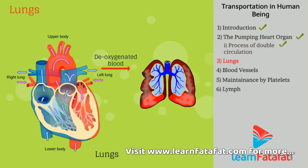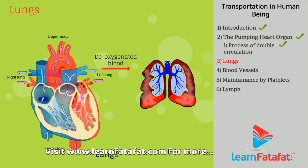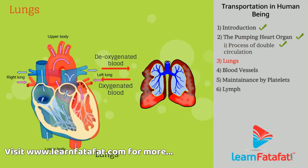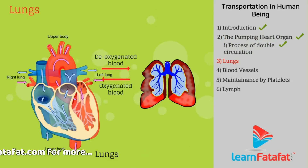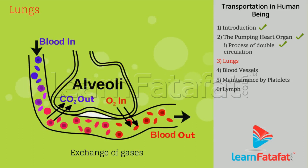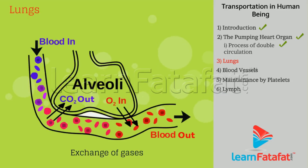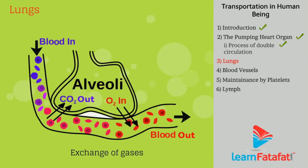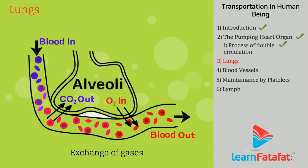The lungs collect deoxygenated blood from the heart and transfer oxygenated blood back to the heart. In the lungs, exchange of gases takes place — oxygen is mixed into the blood and carbon dioxide is released out.